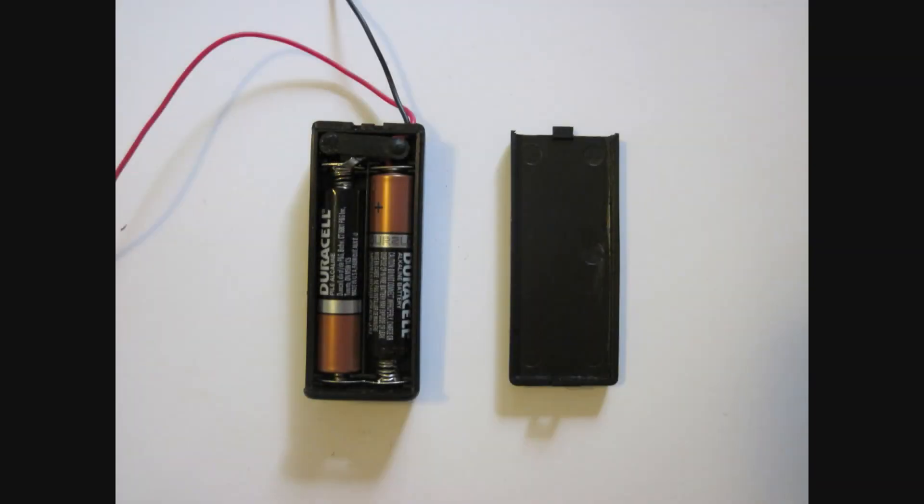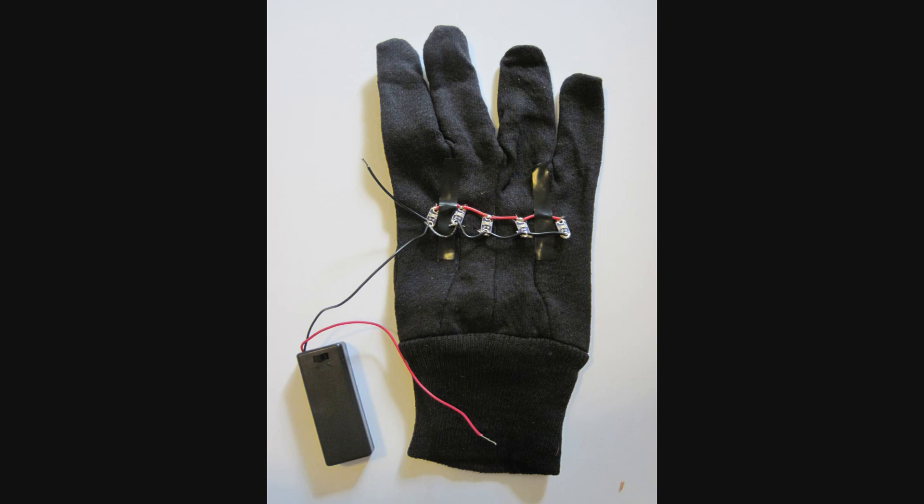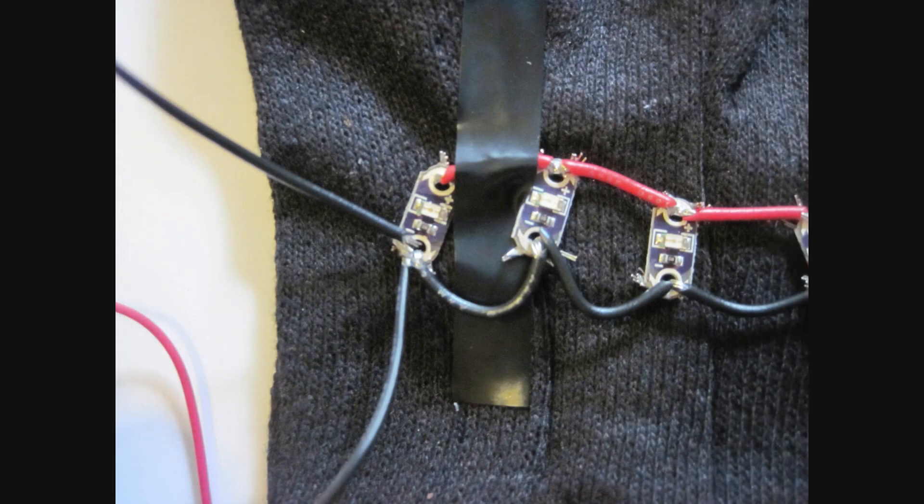Now you're going to get ready to connect the battery pack. Put your two AAA batteries into the battery pack and then put the cover back on. Make sure the power switch is in the off position for now. Then you're going to solder the negative lead from the battery pack, which is the black wire, to one of the negative pads of your LEDs. You can do this to any of the LEDs since they're wired in parallel.